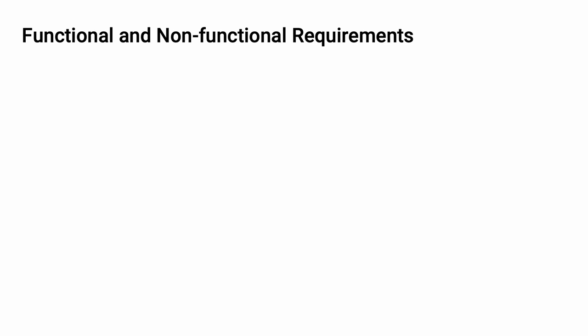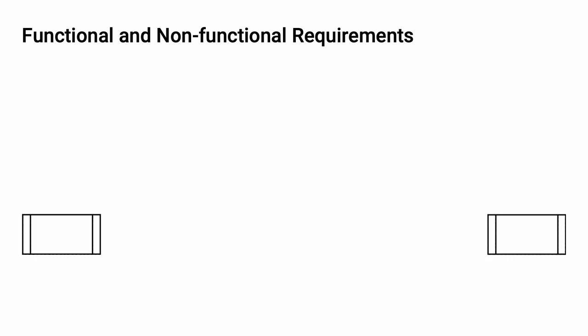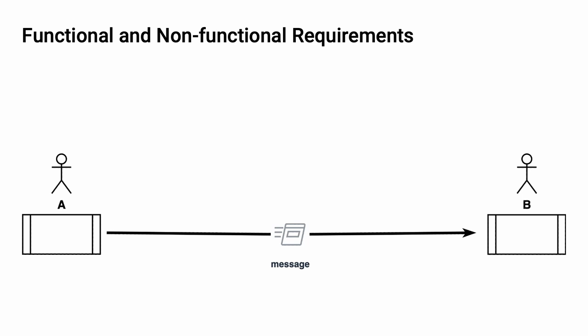Functional requirements are all about what the thing is supposed to do, and non-functional requirements are constraints on the functional requirements. To make this distinction clear, let's cover a real-world example. Say we have two processes — these could be two computers, two cloud instances, or whatever. We have two processes, A and B. These processes may or may not be associated with an entity. We're going to send a message from A to B. Our functional requirement is that A sends B a message. What the message contains, how large the message is, what the channel being used is — we don't care. The functional requirement is that we need to be able to send a message from A to B.